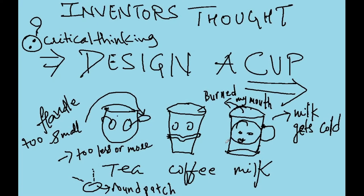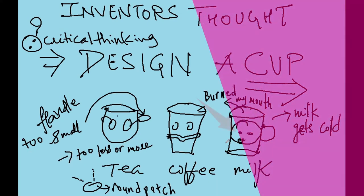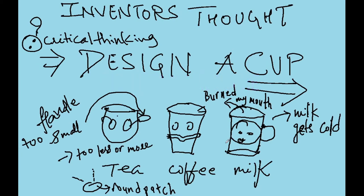Have you wondered why the existing design has problems? Think on this. Meanwhile, let's count some problems. Handle too small to fit in the hand. Too less or too much tea in my cup. No measure when you drink tea in a milk cup, which is usually large.